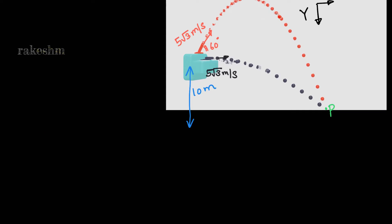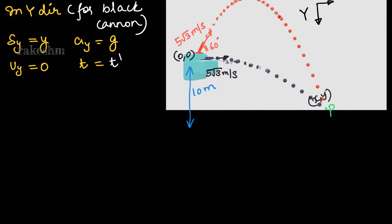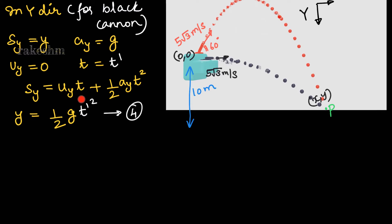Next, let us write the equations in the y direction. For the black cannon, the displacement in y is y, initial y-coordinate is 0, final y-coordinate is y. The initial velocity in the y direction is 0 since the shot is perfectly horizontal. Acceleration in y is g (positive, since downward y is positive), and time is t'. Writing the equation: y = ½ · g · t'².